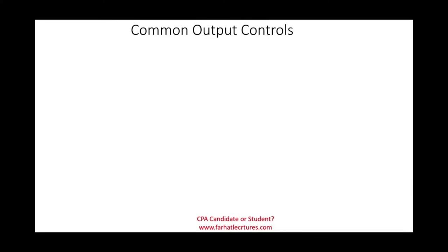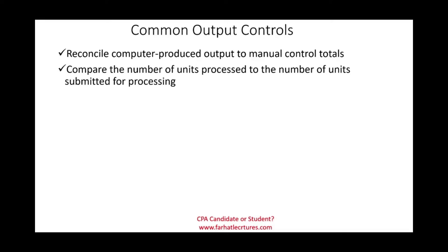What are some common output controls? One thing is reconciling computer-produced output from processing to manual control totals. If we have a lot of transactions, millions and millions of transactions, we could look at reasonableness. But if the information is reasonable, we should process or add the information manually and compare it. Why not? If it's worth doing the reconciliation to make sure it was processed properly. Also, we can compare the number of units or transactions processed to the number of units submitted, making sure everything that was submitted was actually processed.